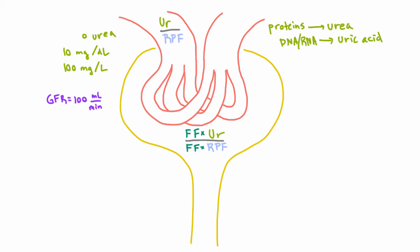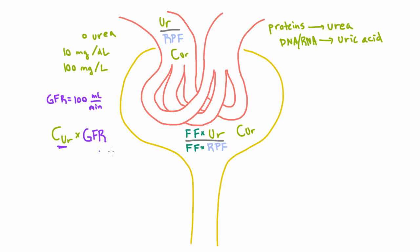That may have been a bunch of unnecessary math, but the point is: for something that's freely filtered, its concentration will be the same in Bowman's space as in the afferent arteriole. Therefore, the amount of that substance filtered at the glomerulus is simply equal to the concentration of that solute — in this case urea — times the glomerular filtration rate. The GFR tells you the volume being filtered, and since concentration is the same, you multiply volume times concentration to get the total amount.